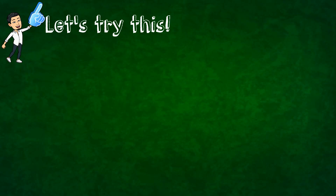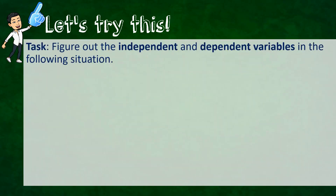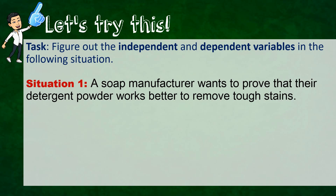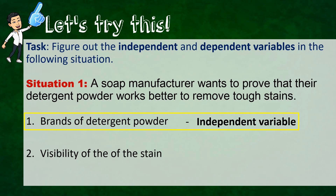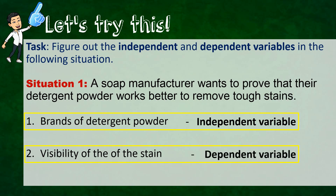Let's try solving these examples. Our task is to figure out the independent and dependent variables in the following situations. First situation: a soap manufacturer wants to prove that their detergent powder works better to remove tough stains. Our first step is to list all the variables we can observe: brands of detergent powder, and visibility of the stain. So our independent variable is the brand of detergent powder, and the dependent variable is the visibility of the stain, because the brand is what causes the change.